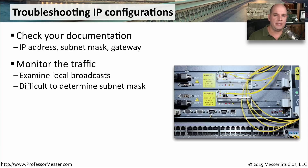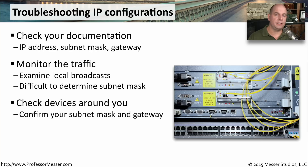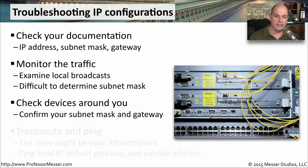We should also see if we can determine what the default subnet mask might be based on routing updates or other IP communication on this particular subnet. We can check devices that are on our local subnet, look at their subnet mask and default gateway settings, and then compare that to what's configured in our device.